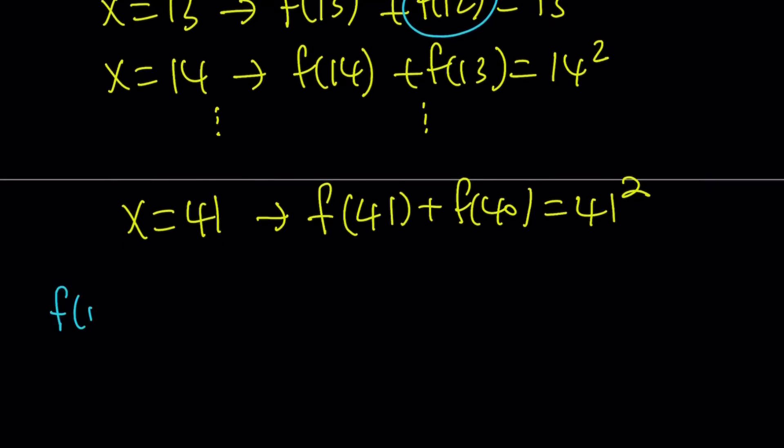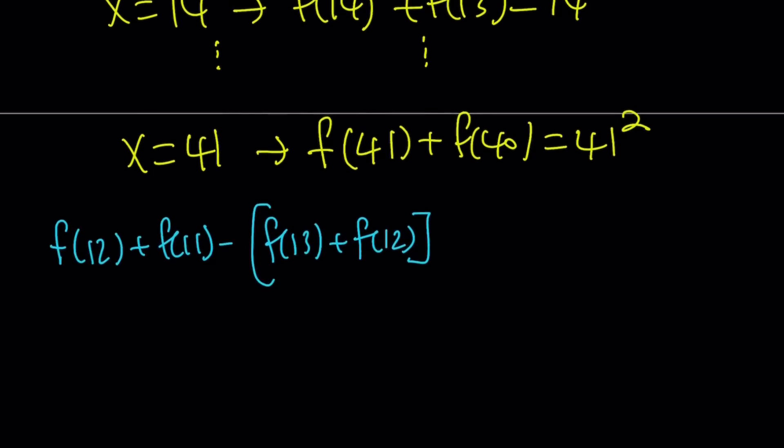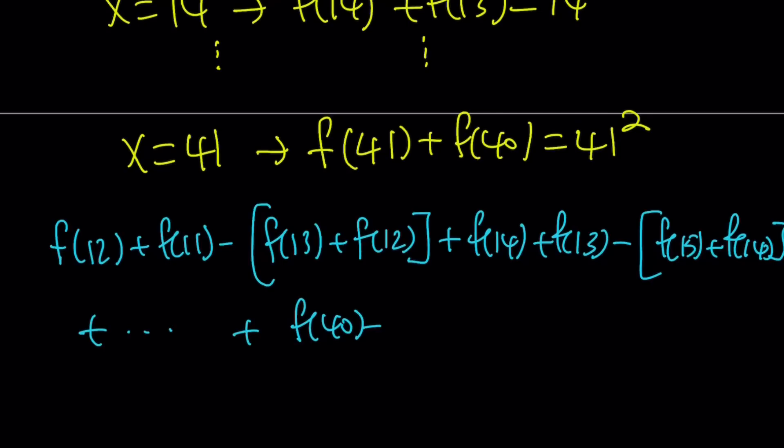So here's how we can do it. We're going to take f of 12 plus f of 11. And then from it, we're going to subtract f of 13 plus f of 12. So we're going to subtract the second equation from the first one. And then we're going to add the third one, which is f of 14 plus f of 13. And then we're going to subtract the next one, which is f of 15 plus f of 14. And we're just going to proceed in this manner until we get to f of 40 plus f of 39. And then finally, we're going to be subtracting from this f of 41 plus f of 40.